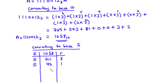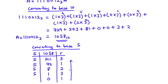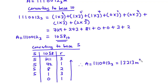5 goes into 42 eight times. 5 times 8 is 40, so 42 minus 40 gives remainder 2. 5 goes into 8 once; 8 minus 5 is remainder 3. 5 goes into 1 zero times; 1 minus 0 gives remainder 1. Reading the remainders from bottom to top, the area of the rectangular backyard garden, which was 1110012 base 3 meter square, is equal to 13213 base 5 meter square.